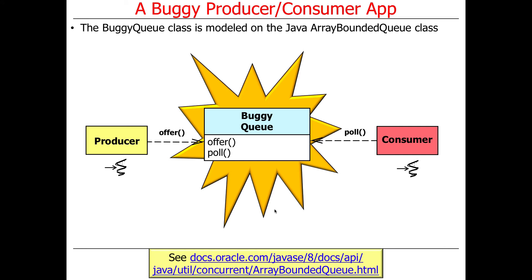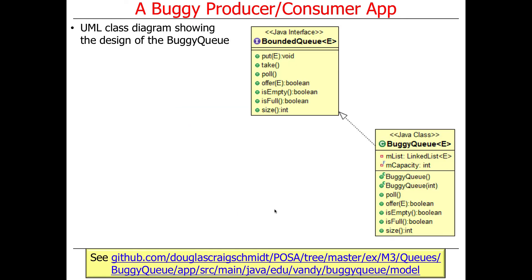The BuggyQueue example is a concurrent producer-consumer app that attempts to pass messages between threads using a queue that is not properly synchronized. The actual BuggyQueue itself is modeled on the Java ArrayBlockingQueue class, which allows you to insert and remove things properly between multiple threads because it is synchronized correctly. Our implementation leaves out the important synchronization. It implements the bounded queue interface with all the required methods, but it's an evil sleight of hand — it appears to support synchronized access, but we've left all the synchronization out.